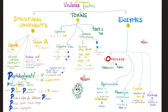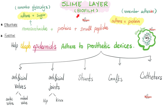Do you remember Staph aureus and its virulence factors? One of them was the slime layer, also known as the biofilm, which helps it adhere to prosthetic devices like artificial valves, artificial joints, etc. The slime layer or the biofilm helps the bacteria adhere.